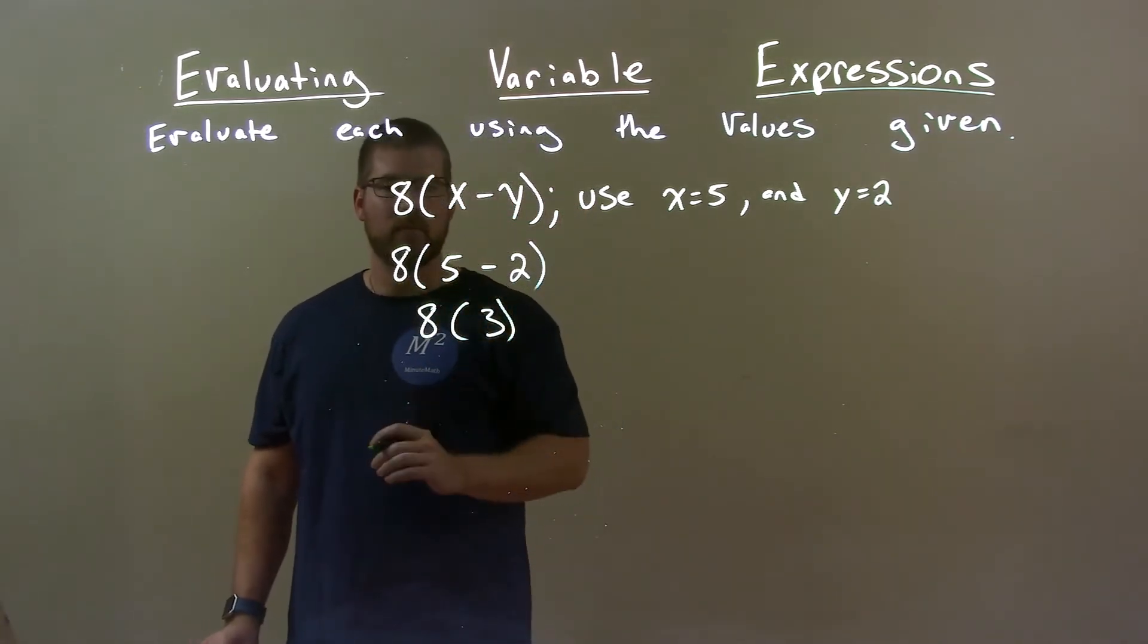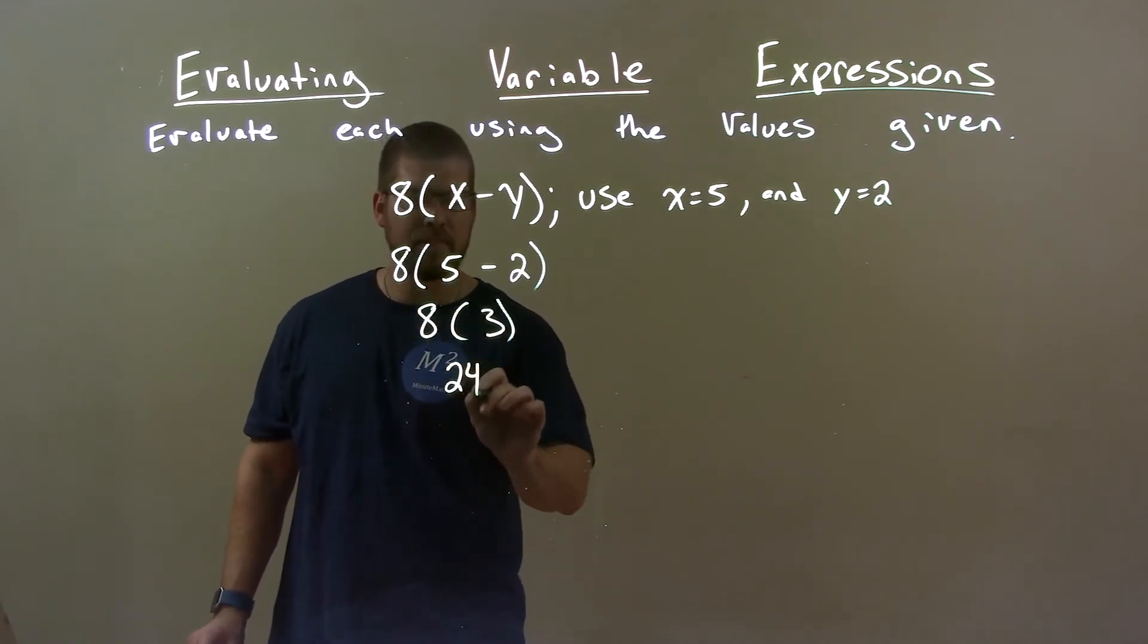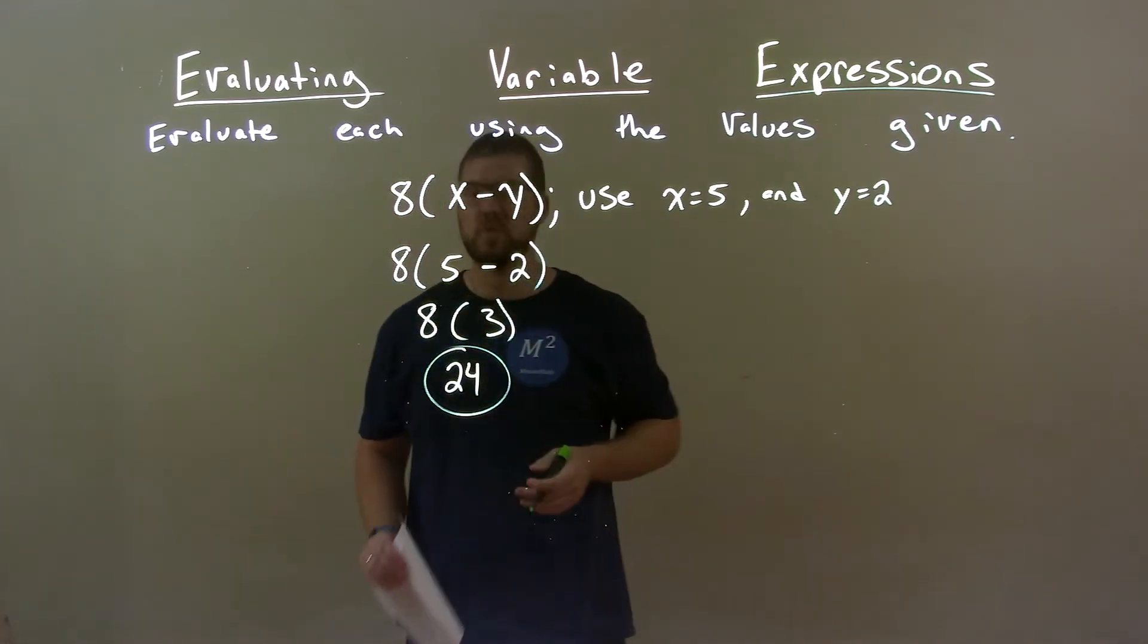Multiplication happens with the parentheses. So, 8 times 3 is 24. And our final answer now is 24.